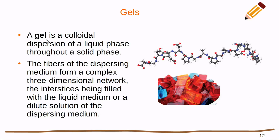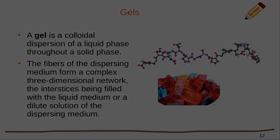One last thing to discuss is a gel — a colloidal dispersion of a liquid phase throughout a solid phase. The classic example is jello, where water is trapped in a solid phase of pectin. Because we have enough water trapped in there, it gives it that gel effect. The fibers of the dispersing medium — pectin in this case — form a complex three-dimensional network, and the interstices, the little spaces between those fibers, are filled with the liquid medium, in this case water.